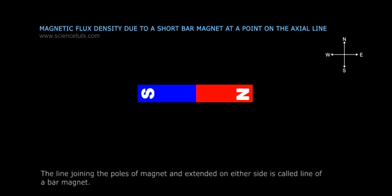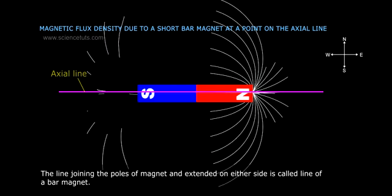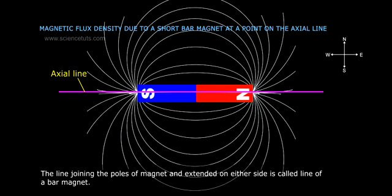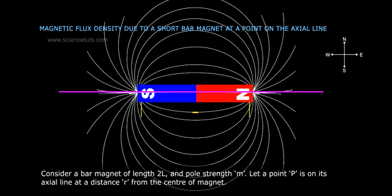Magnetic flux density due to a short bar magnet at a point on the axial line. The line joining the poles of a magnet and extended on either side is called the axial line of a bar magnet. Consider a bar magnet of length 2l and pole strength m.